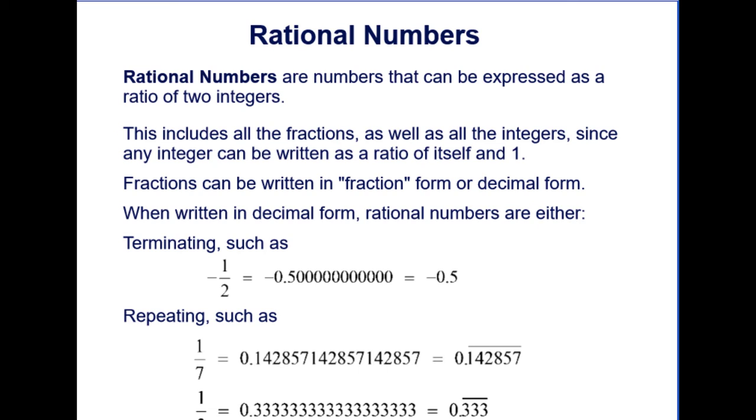And rational numbers are numbers that can be expressed as the ratio of two integers. So this includes fractions—the ratio of two numbers, the ratio of two integers—as well as all the integers themselves, since any integer can be written as a ratio of itself and 1.